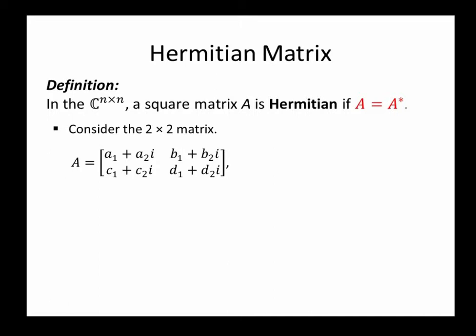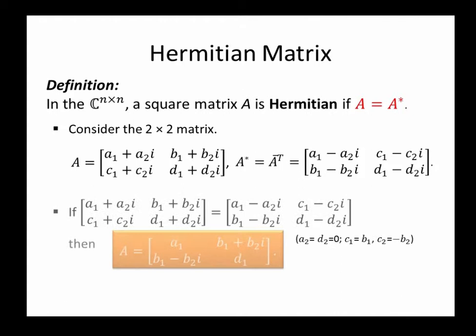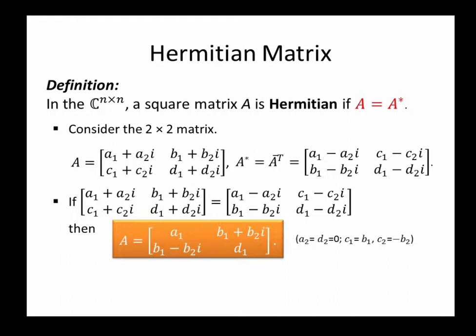We can recognize Hermitian matrices by inspection. To see this, consider the 2x2 matrix. If A equals A dagger, then a2 and d2 have to be 0 and c1 equals b1, c2 equals negative b2. We can obtain the new form of A. Please note that elements on the main diagonal of A are real, and the aij is the conjugate of aji.